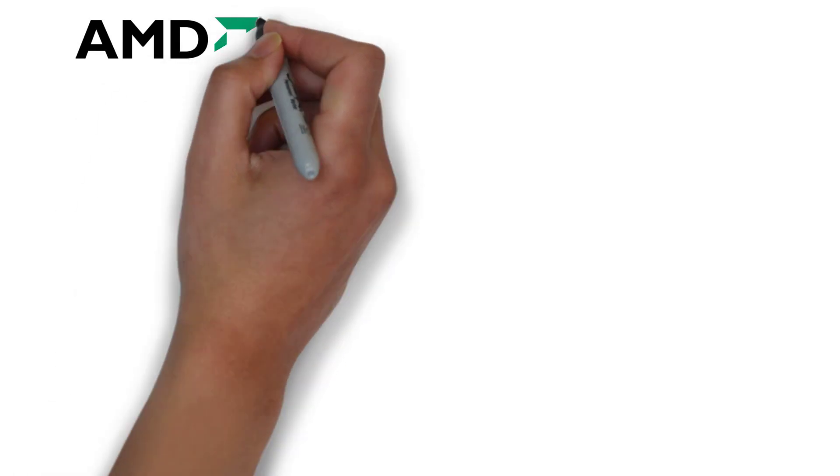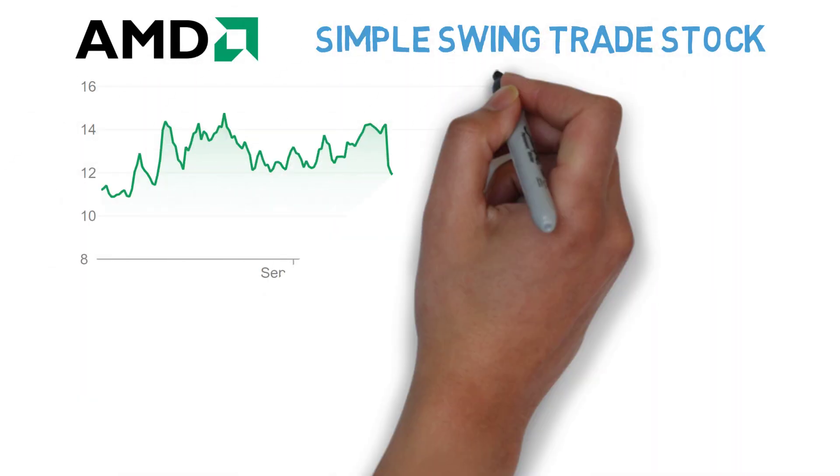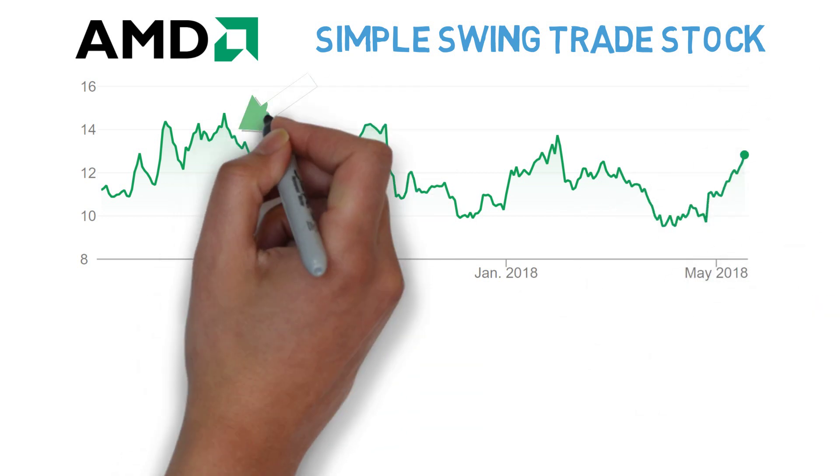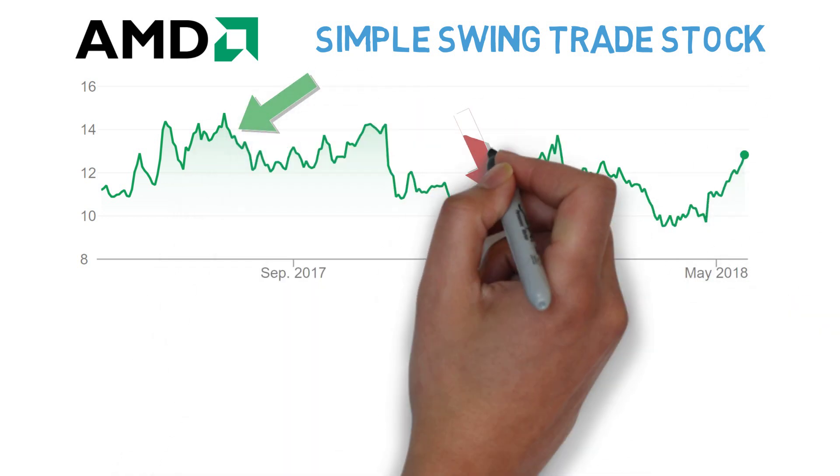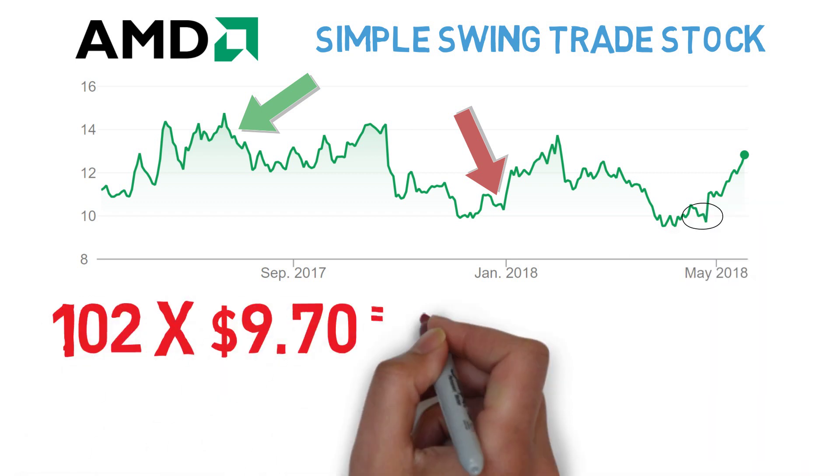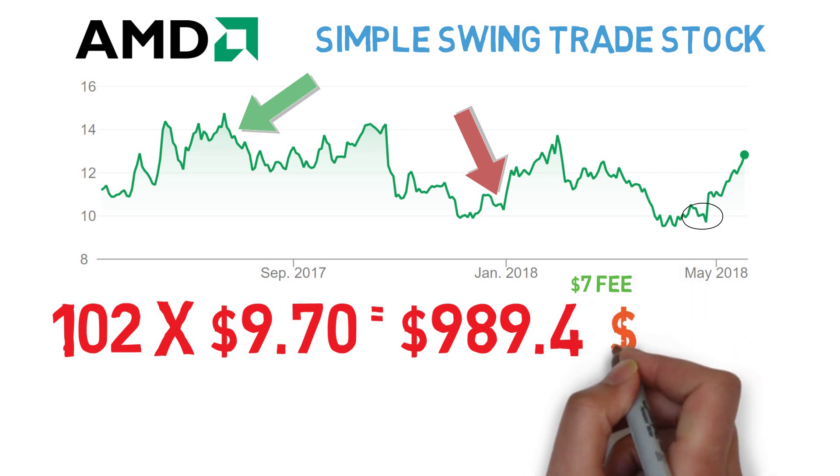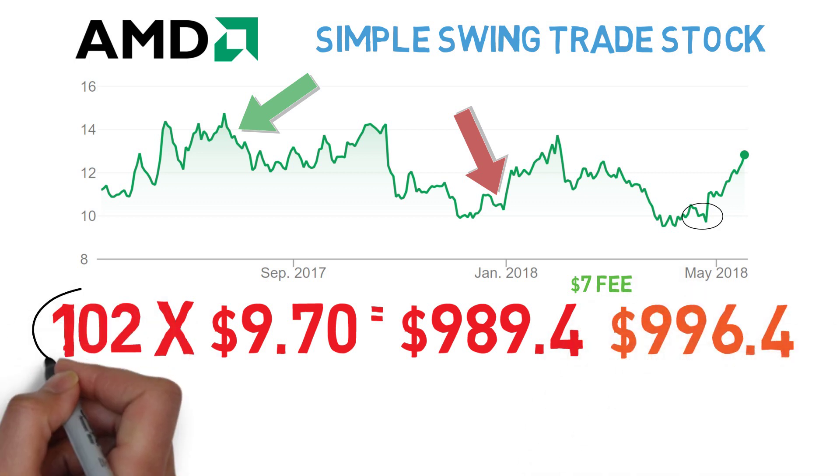Now let's look at a real world example using your first thousand. AMD is a risky company people like to swing trade because it bounces between $10 and $14 a lot. I bought in at $9.70. If I only had $1,000, that's 102 shares, or $989.40. Your brokerage will charge you a fee of $7, so a total of $996.40.